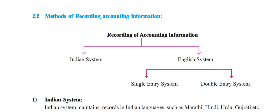As you can see on the screen, here are the methods of recording accounting information. There are two methods basically — one is our Indian system and the other is the English system. Under the English system, we have two classifications: one is the single entry system and the other is the double entry system, which is applicable right now.